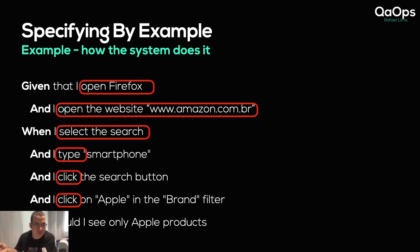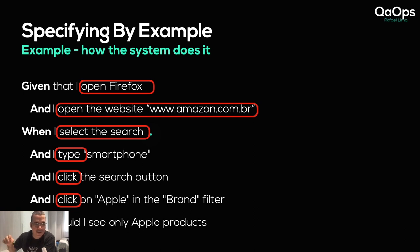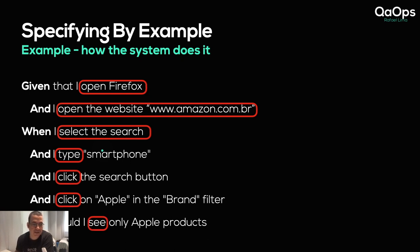If they also change how you search, your scenario is broken. And you click the search button, and you click on Apple in the brand filter — you're telling specifically every step, a very step-by-step approach. Maybe the button is now a hover, maybe you're using the keyboard. Then 'I should see only Apple products' — what if you're talking about accessibility and somebody is hearing, not seeing? So many steps.